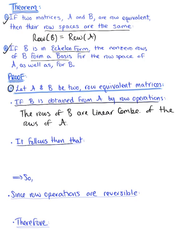It follows that any linear combination of the rows of matrix B is automatically a linear combination of the rows of matrix A.